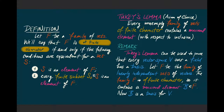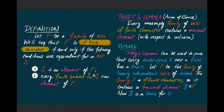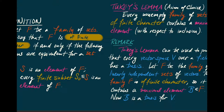So now what does Tukey's Lemma say? Tukey's Lemma says that every non-empty family of sets that is of finite character must contain a maximal element with respect to inclusion. That maximal element is an element with the property that if you added any other element to it, that set would no longer be a member of the family. So if you have a family of sets such that the condition to be in that family is determined by the finite subsets of your set, then that family must contain a maximal element with respect to inclusion.